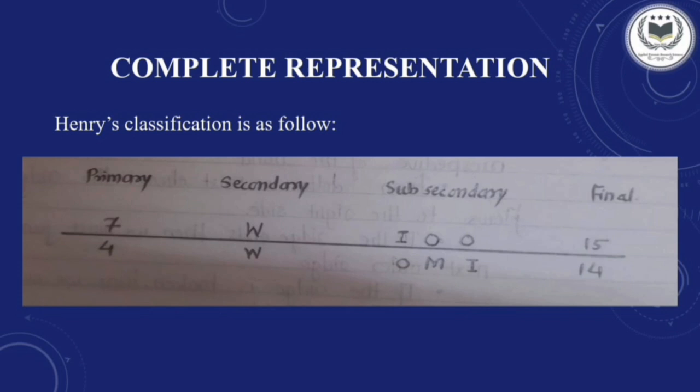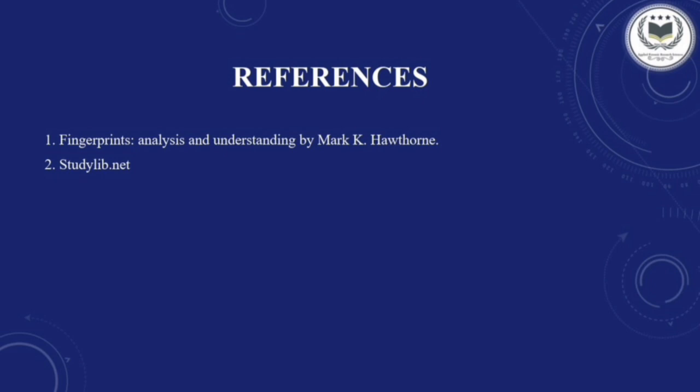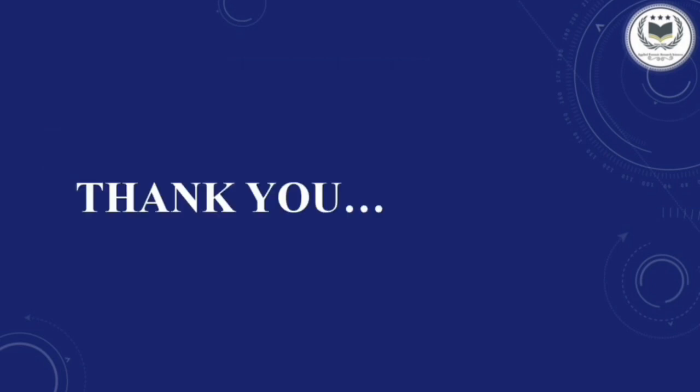After completing all four major classifications, the complete representation of the Henry's fingerprint classification system is written as numerator upon denominator: first the primary value, then the secondary value, then the sub-secondary value, and finally the final classification value, as shown in the picture. The content in this presentation has references from Fingerprint Analysis and Understanding by Mark K. Hawthorne and StudyLib.net. Thank you all — if you like this video, please like, comment, share, and subscribe, and do visit our channel, Applied Forensic Research Sciences.